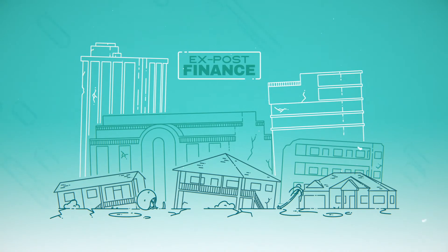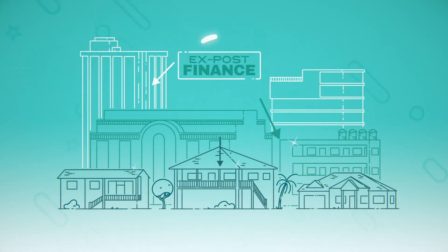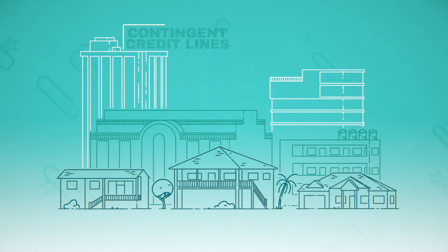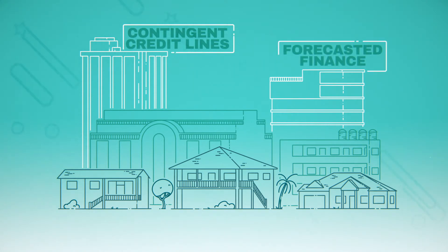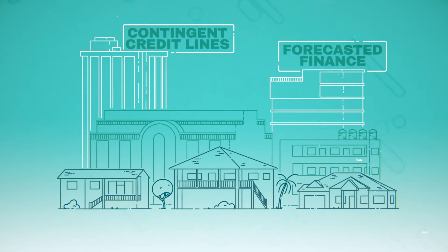On the other hand, ex-post finance refers to instruments employed after a natural hazard occurs, meaning that resources are spent after a natural disaster. But like risk transfer, contingent credit lines and forecasted finance are also used to assist in post-disaster recovery after a natural hazard occurs.